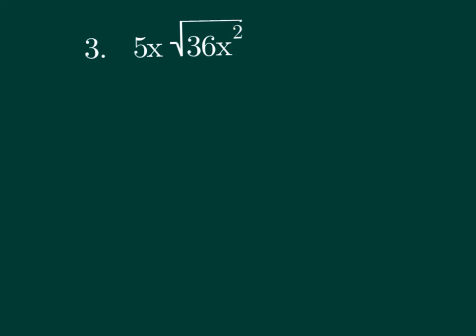My final example here. Again, we have a 5X outside. We're going to simplify 36X squared. Maybe I already know a square root. If you know the square root of 36, that's a good thing. 36 is 6 and 6. Well, there's my pair. I'm good. On my X, notice my even exponent. That's a good thing. X squared breaks up as X and X. There's another pair.